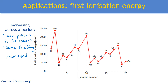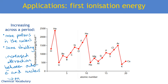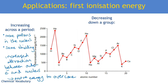Increased attraction between the outer electron and the nucleus means more energy is needed to overcome this attraction. So: distance does not change — if anything, distance gets slightly smaller. More protons means more charge, same shielding, and therefore more attraction, which is why first ionization energy increases across a period.